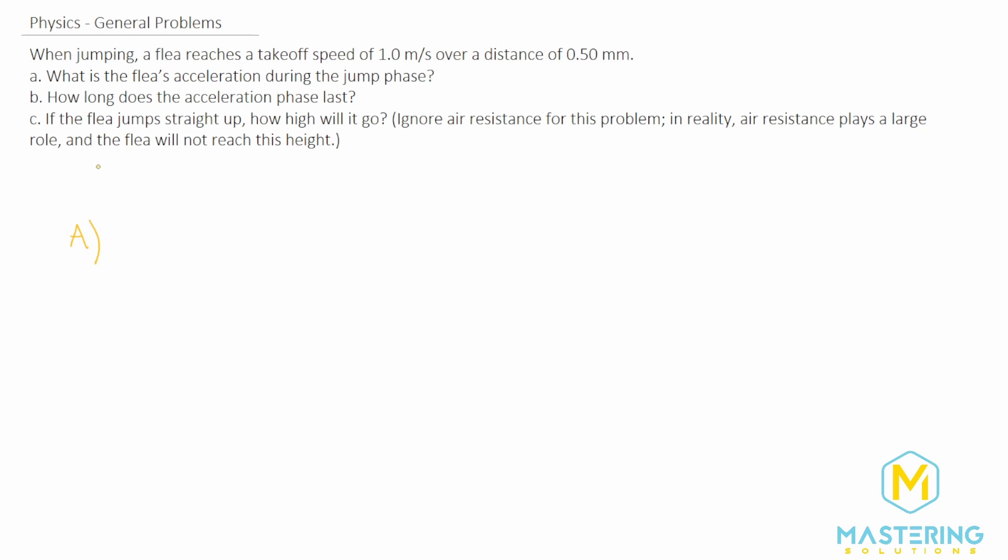Let's start by making a list of the variables that we're given. They tell us that the final velocity, or the speed that it reaches at the end of the jump, is 1 meter per second, and the distance, or the delta y, is 0.5 millimeters. That's not in standard units though, so we can change the milli to what it stands for, 0.5 times 10 to the negative 3 meters, and now we're in standard units for delta y.